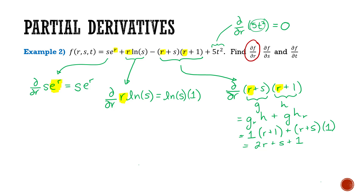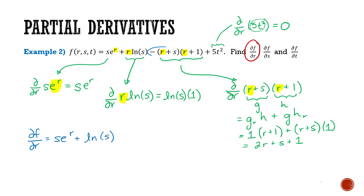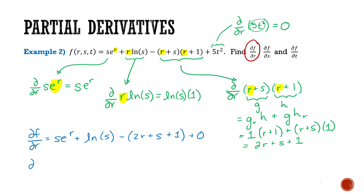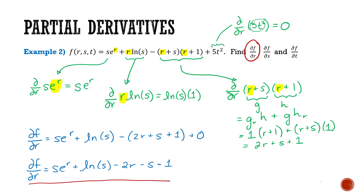Putting this all together, ∂f/∂r is going to be: the derivative of s·e^r is simply s·e^r, plus the derivative of r·ln(s) which is ln(s), minus the derivative of (r + s)(r + 1) which is 2r + s + 1, plus the derivative of 5t² which is 0. Simplifying, ∂f/∂r = s·e^r + ln(s) − 2r − s − 1. And that's my final answer.